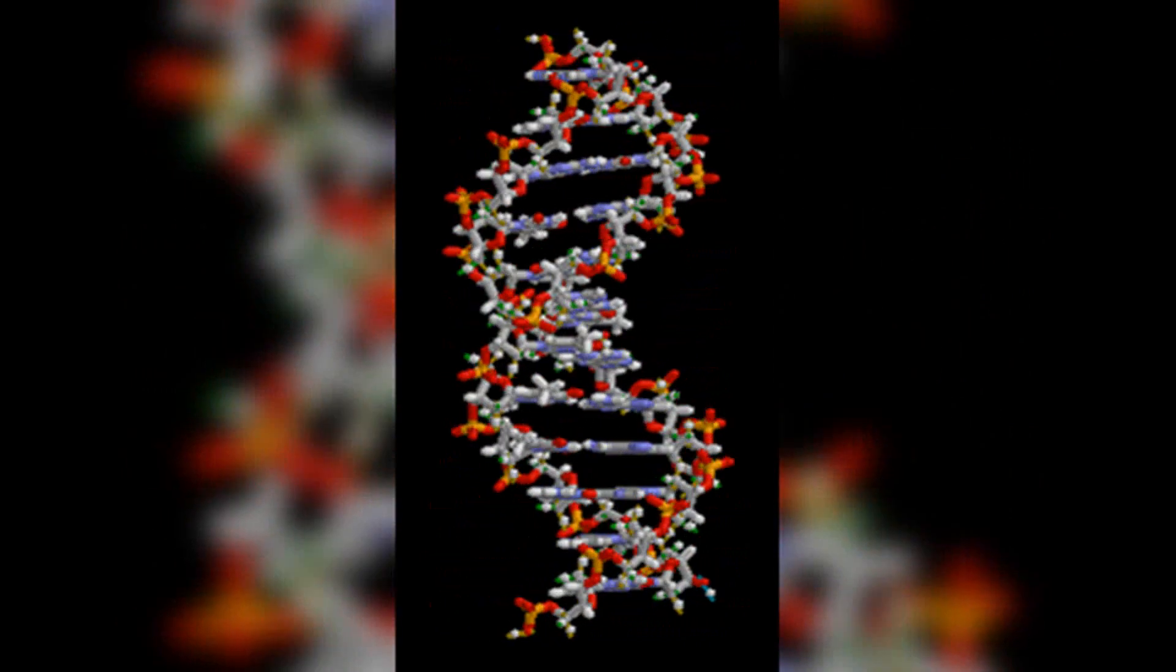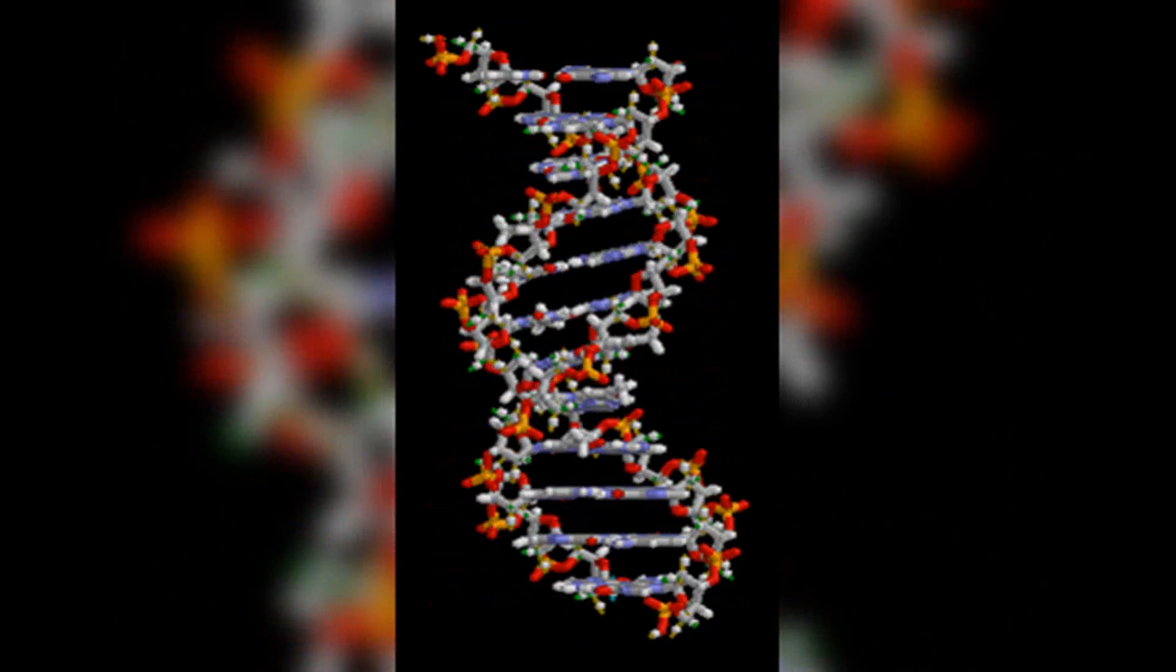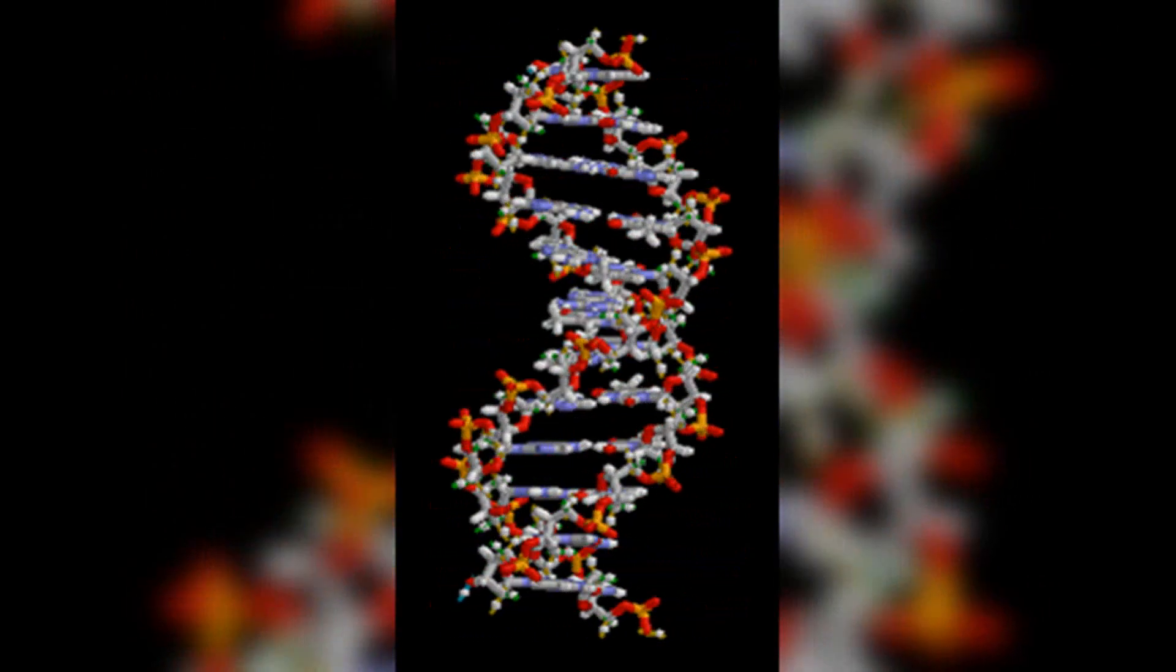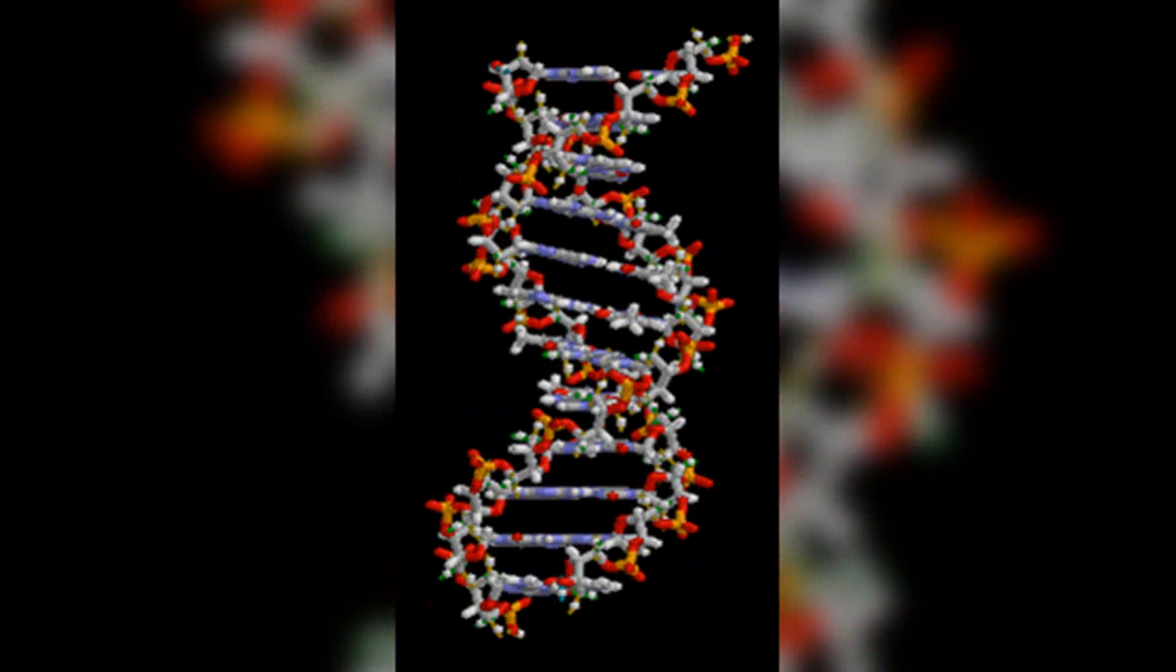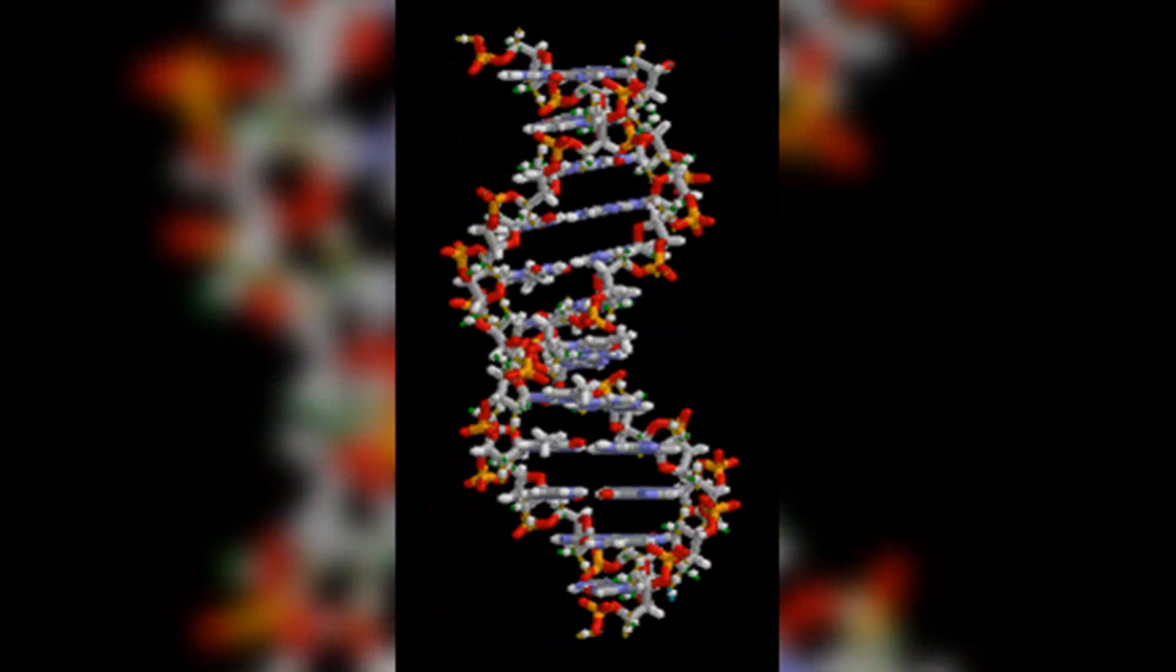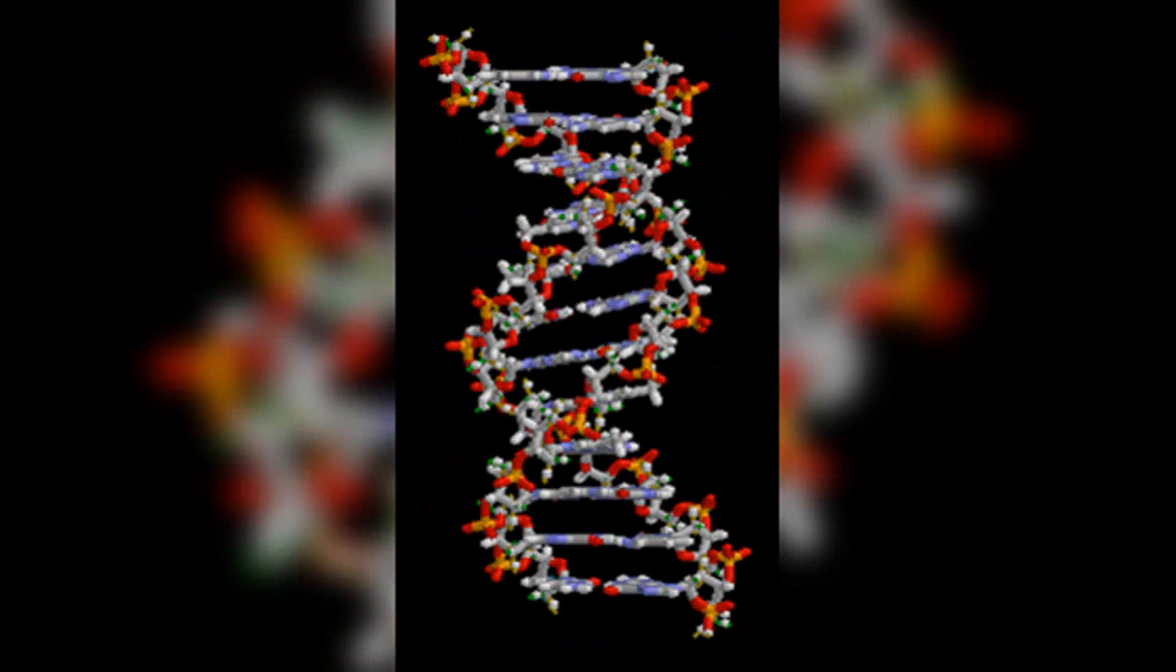DNA replication is the process by which DNA is copied during cell division. It ensures that each new cell receives an identical set of genetic information. DNA also undergoes processes such as transcription and translation to convert the genetic information into functional proteins.